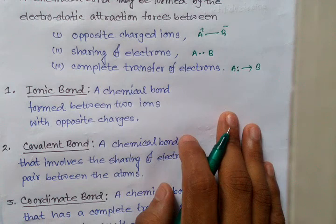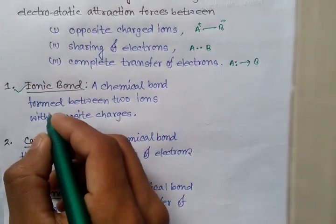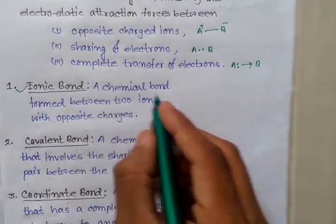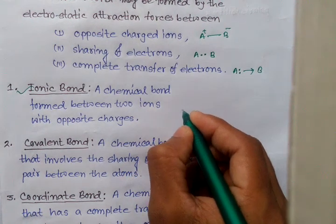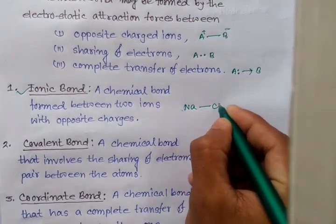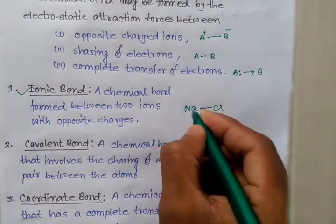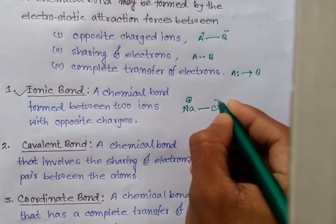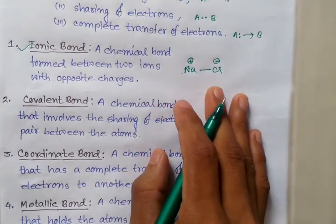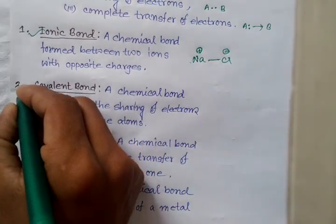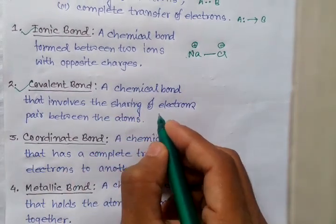There are many types of bonds. One is the ionic bond: a chemical bond formed between two ions with opposite charges — for example, NaCl. This bond is ionic because it forms between two ions of opposite charges. Another type is the covalent bond: a chemical bond that involves the sharing of electron pairs between atoms.